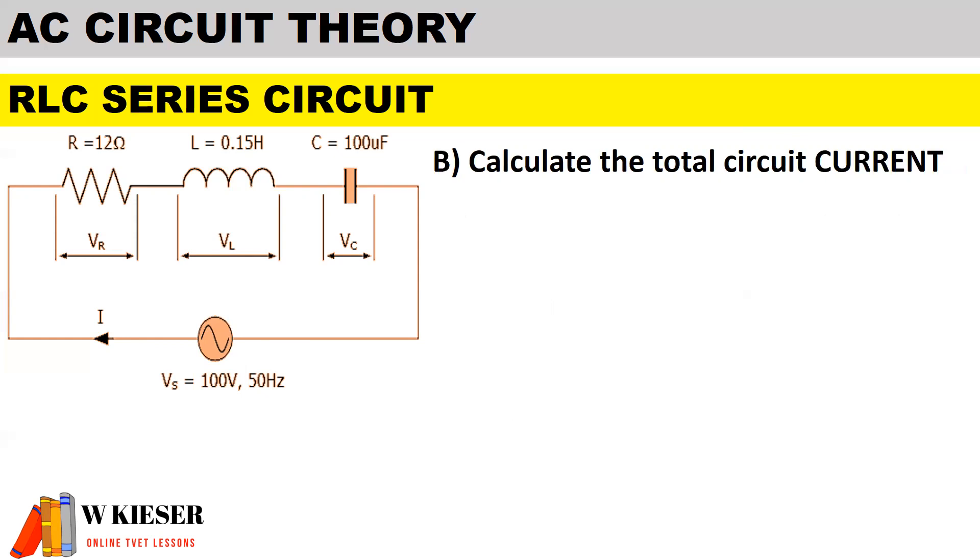In part b, calculate the total circuit current. It's a series circuit, therefore current remains the same. So current is equal to the supply voltage of 100 volts divided by the impedance total of 19.4 ohms. And we end up with a current of 5.14 amps.